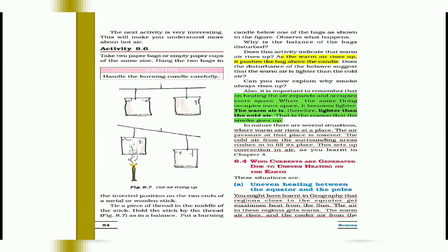The next activity is very interesting and will help you understand more about hot air. In Activity 8.6, you have to take two paper bags, turn them upside down, and hang the two bags in an inverted position on the two ends of a metallic or wooden stick. Then tie a thread in the middle part of the stick to balance it.